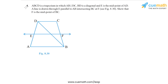The problem statement in question 4 says ABCD is a trapezium in which AB is parallel to DC. BD is a diagonal and E is the midpoint of AD. A line is drawn through E parallel to AB intersecting BC at F. We have to show that F is the midpoint of BC.